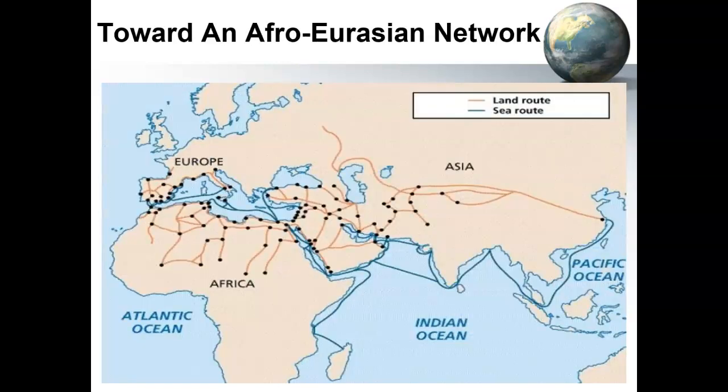My premise is that by 1450, what starts off as four different separate trade networks are all overlapping. The spread of goods is obviously a big part of that, but I hope what you've gotten from today's lesson is that it's much more than just goods that are diffused. Thank you for your attention — I appreciate you. I'll see you in class.